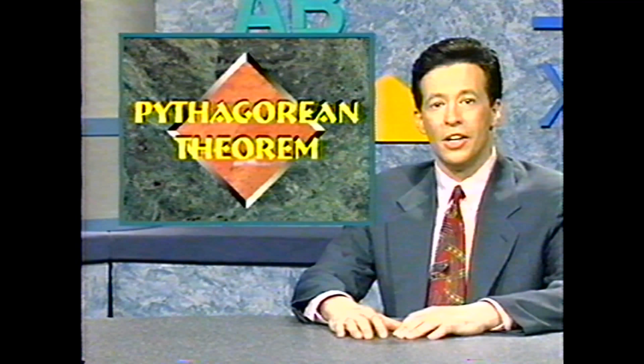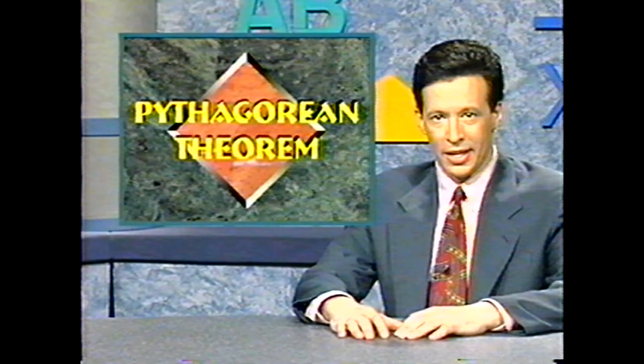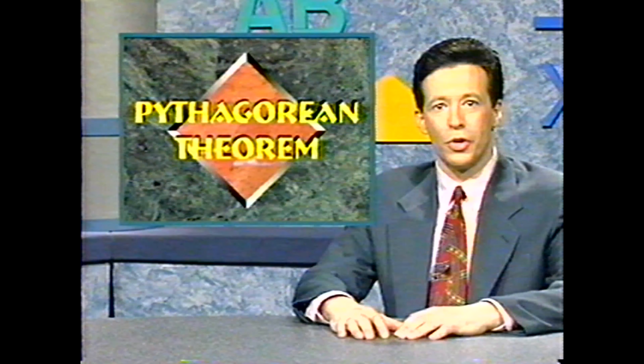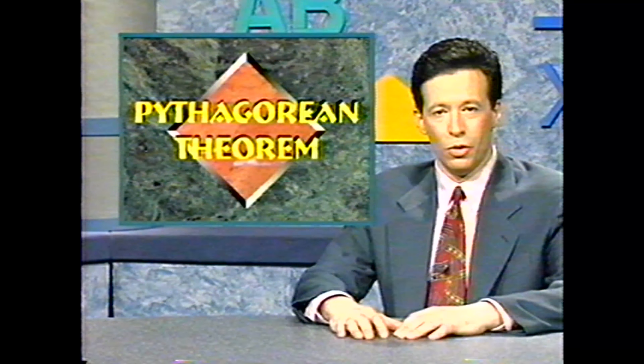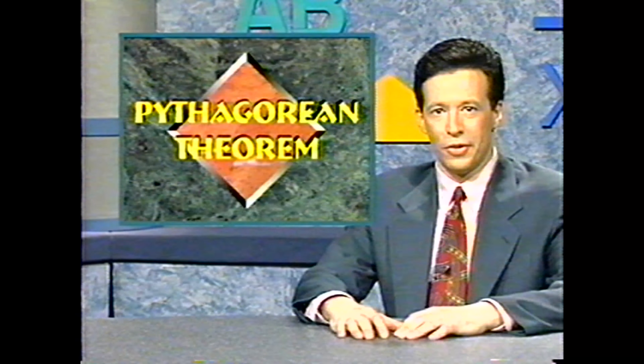We'll start with right triangles. We're going to talk about a special relationship that exists between the sides of any right triangle. The name of this relationship is the Pythagorean theorem. It's named after the Greek mathematician Pythagoras, who lived about 2,500 years ago. This relationship was known and used many centuries before Pythagoras, but Pythagoras proved that the theorem is true.